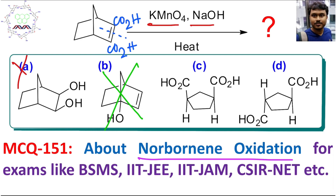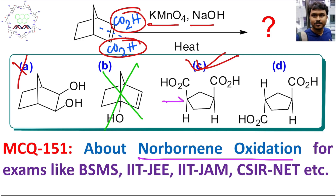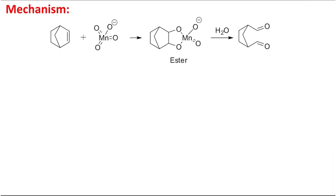From this, you can easily say that the two carboxylic acids are in a cis fashion, or on the same side. So the answer is option C. This is the most straightforward explanation for this problem. But I believe you should know the mechanism as well, so I am giving you that next.